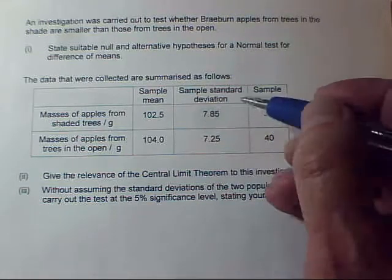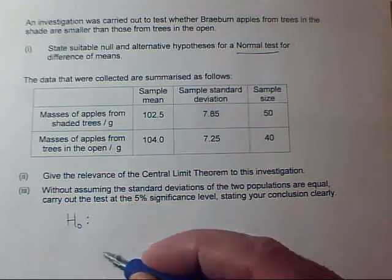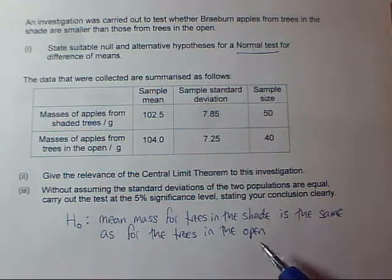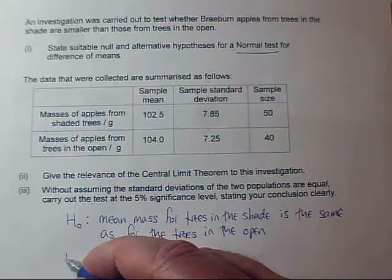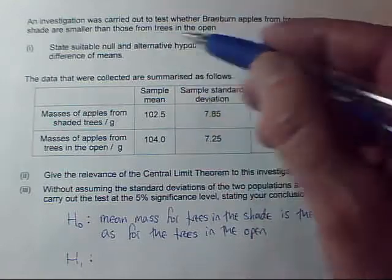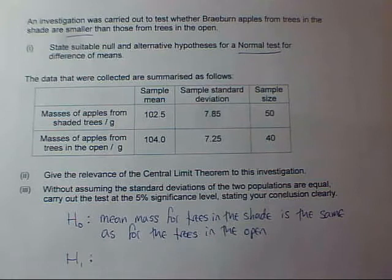It's a normal test comparing means. The null hypothesis is that the means are the same in both conditions. Stated in context: the mean mass for trees in the shade is the same as for trees in the open. The alternate hypothesis contradicts that, but I have to read the question carefully — are we interested in any difference, or a particular direction? I'm investigating whether masses on average are smaller in the shade, so I'm only interested in the mean mass for trees in the shade being smaller than the other mean.